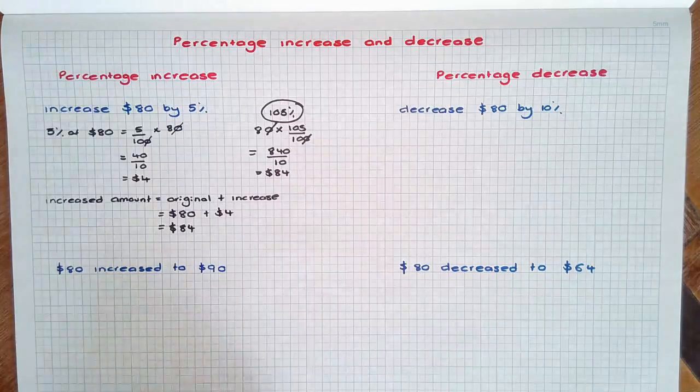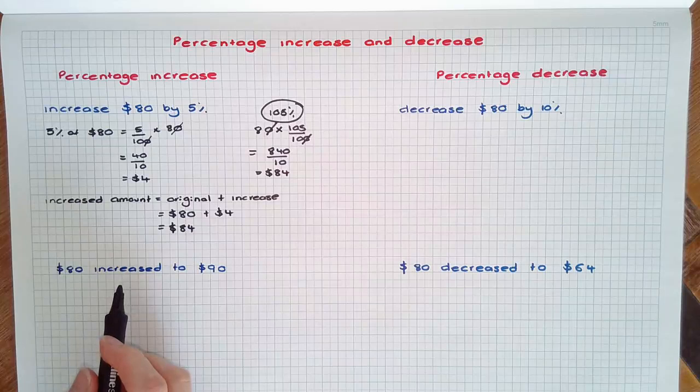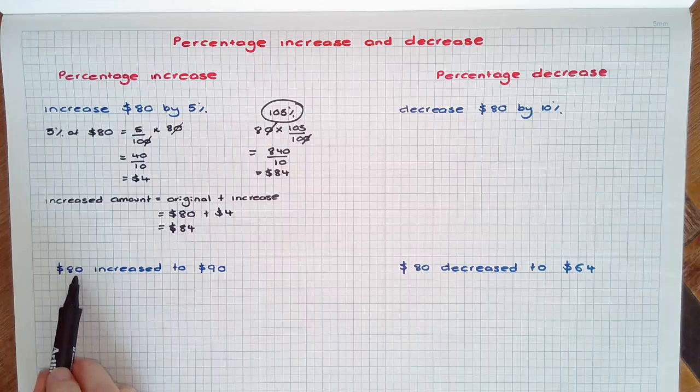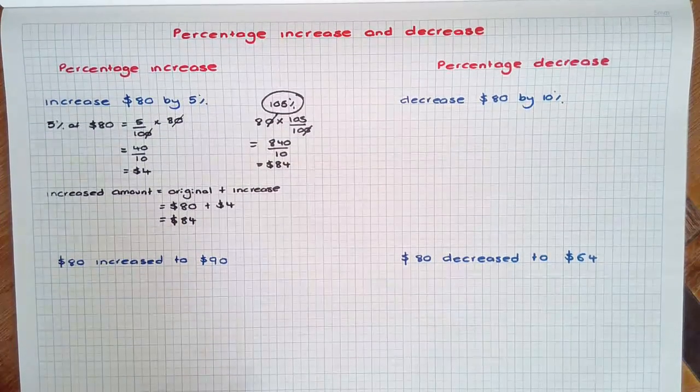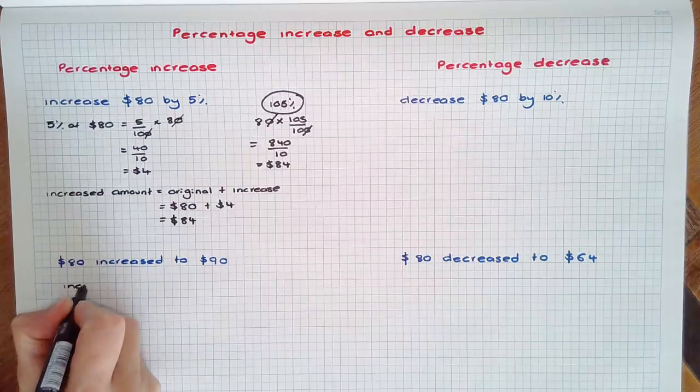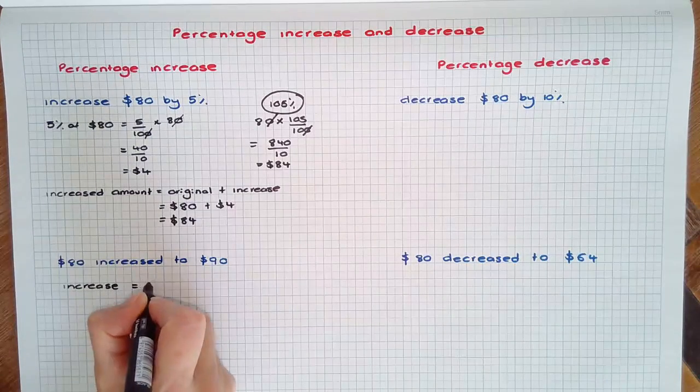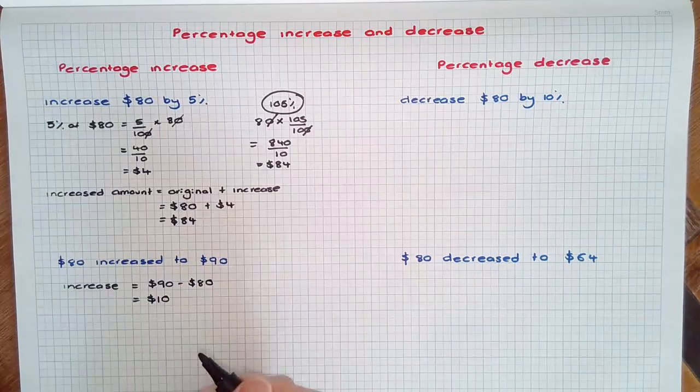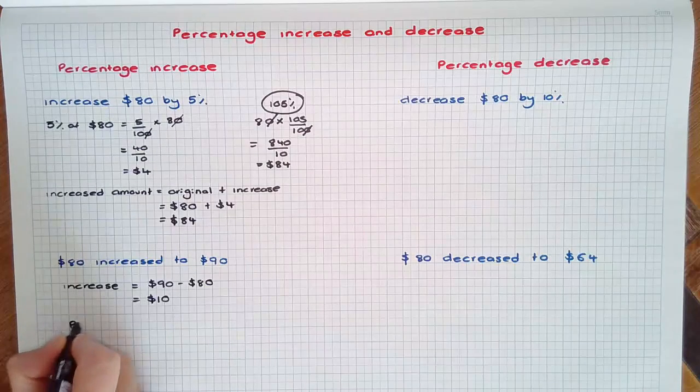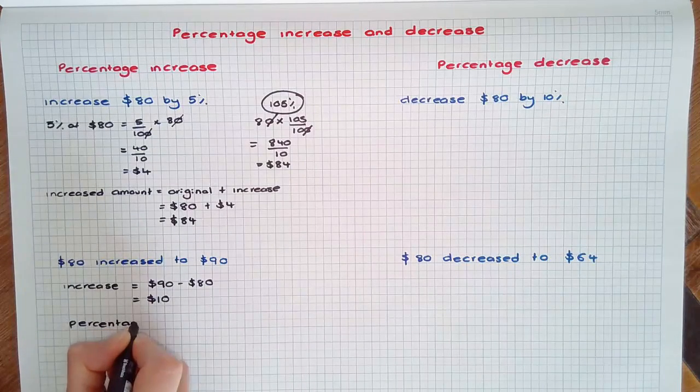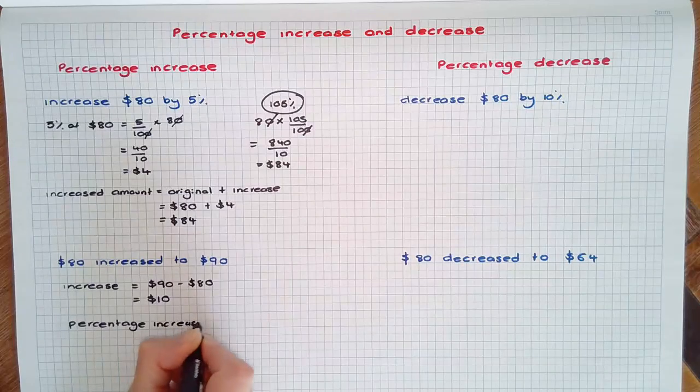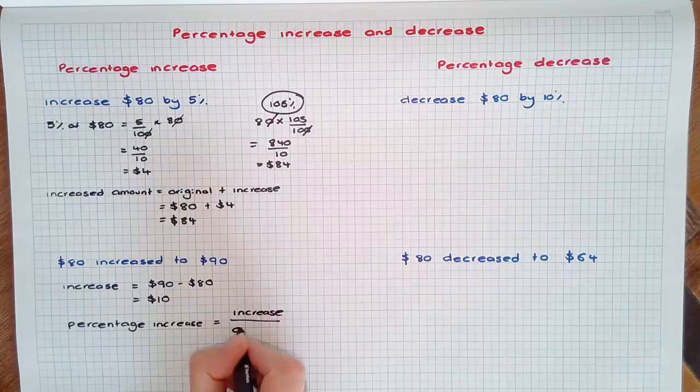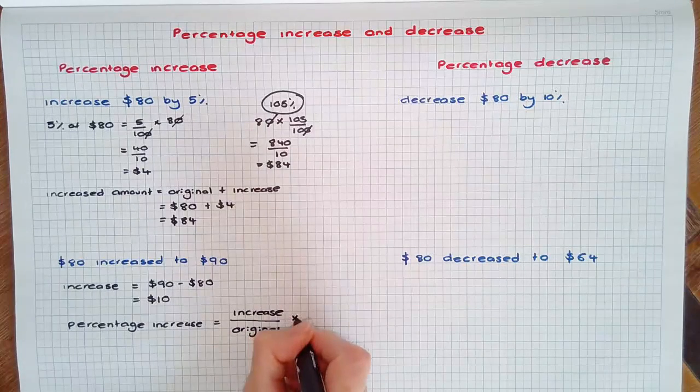Now suppose the cost of a product did increase by a certain amount and you want to calculate the percentage increase. For example, $80 increasing to $90. The increase equals 90 take away the original 80 which is $10. Now the percentage increase equals the increase over the original amount times 100%.